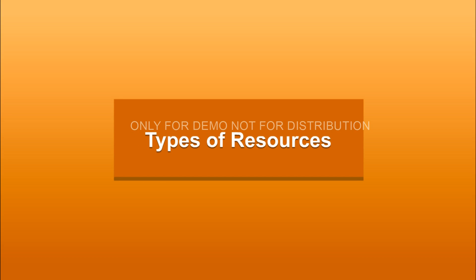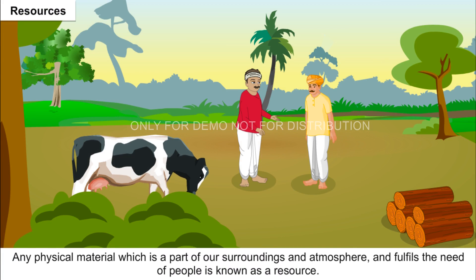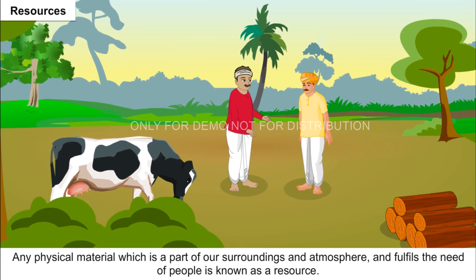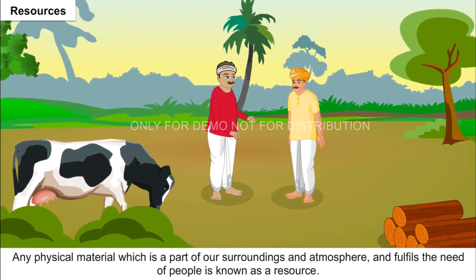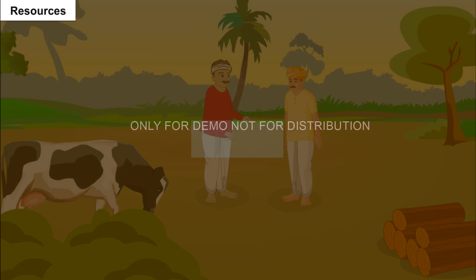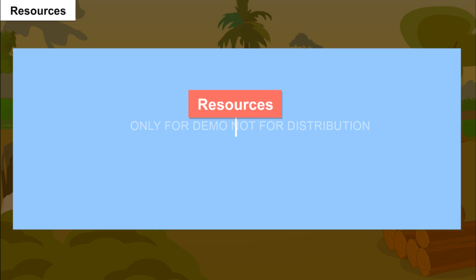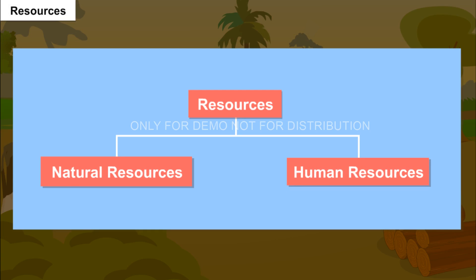Types of Resources: Any physical material which is a part of our surroundings and atmosphere and fulfills the need of people is known as a resource. Resources are broadly classified as natural resources and human resources, which are further divided into more categories and subcategories.